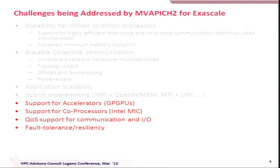We went over a lot of details yesterday on scalability, collectives, and hybrid programming. Today we'll focus on four directions: support for accelerators like GPGPUs, then Intel MIC, then how to take advantage of QoS support for performance isolation in clusters, and finally emerging trends in fault tolerance and resiliency. In our latest release we have integrated Lawrence Livermore's Scalable Checkpoint Restart (SCR), and I'll show some numbers and use cases.